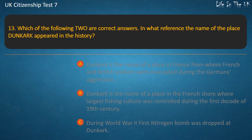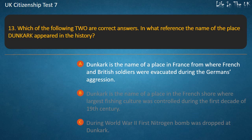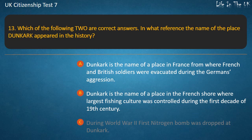Question 13: Which of the following two are correct answers — in what reference does the name of the place Dunkerque appear in history? Options: Dunkerque is a place in France from where French and British soldiers were evacuated during German aggression; Dunkerque is a place on the French shore where the largest fishing culture was controlled during the first decade of the 19th century; During World War Two the first nitrogen bomb was dropped at Dunkerque; During World War Two the Allied forces were surrounded by German regiments in Dunkerque and a huge battle was fought, known as the Battle of Dunkerque. Answer: Dunkerque is a place in France from where French and British soldiers were evacuated during German aggression, and during World War Two the Allied forces were surrounded by German regiments in Dunkerque in what was known as the Battle of Dunkerque.